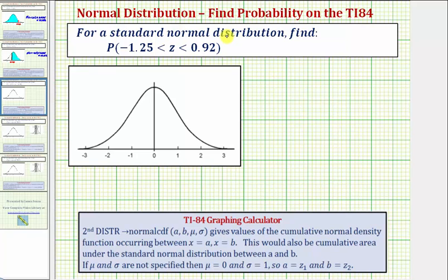Welcome to an example on how to use the newer version of the TI-84 to determine the probability that a z-score is between two given z-scores for the standard normal distribution. Here we're asked to find the probability that z is greater than negative 1.25 and less than 0.92.